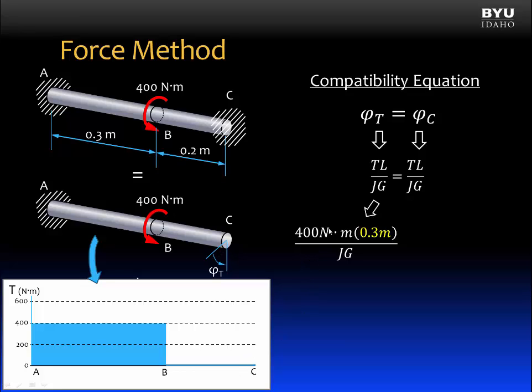So rewrite our internal torque: T is 400 newton meters. The length is 0.3 meters. That is the length from A to B, which is feeling the internal torque of 400 newton meters. And J and G will leave in this form.